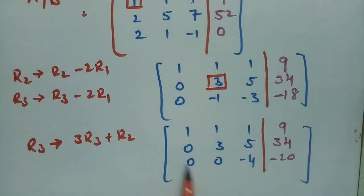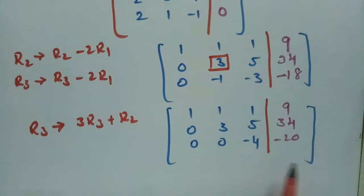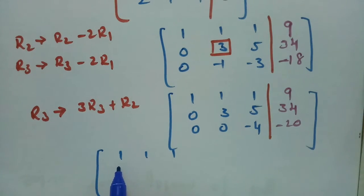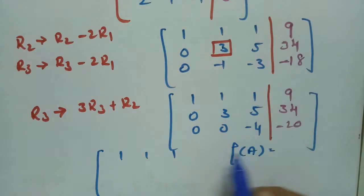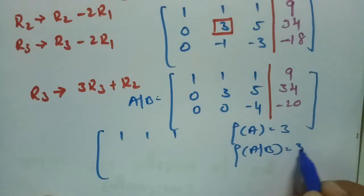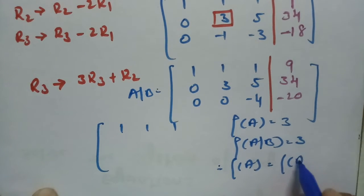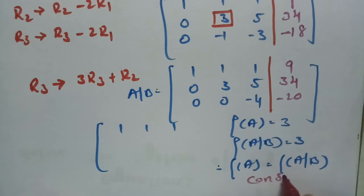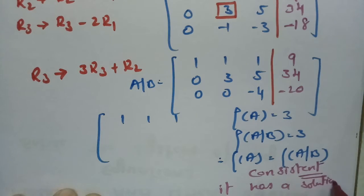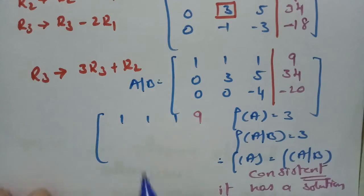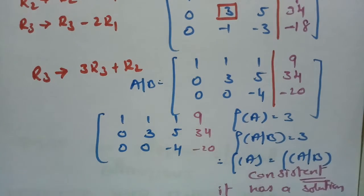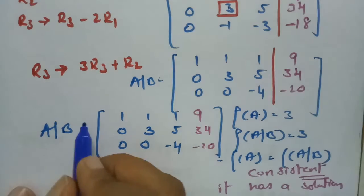With a partition separating A from [A|B], the augmented matrix is now in row echelon form: rows 1 1 1 | 9, then 0 3 5 | 34, then 0 0 minus 4 | minus 20. The rank of A equals 3 (number of non-zero rows), and rank of [A|B] is also 3. Since rank of A equals rank of [A|B], the system is consistent and has a solution.